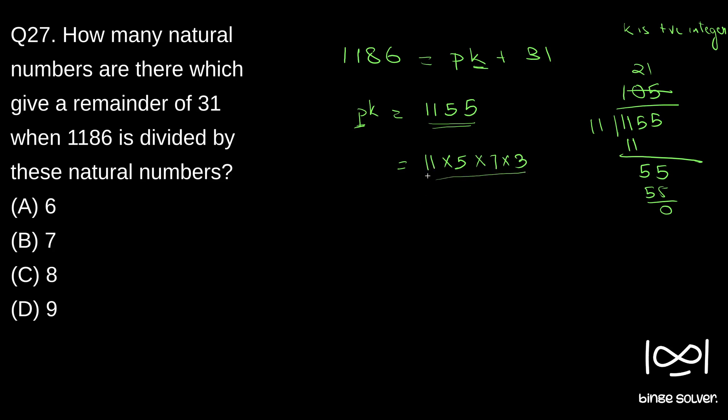So for this to satisfy P cannot have, P should be greater than 31, right? P has to be greater than 31 and that is the only condition we have.